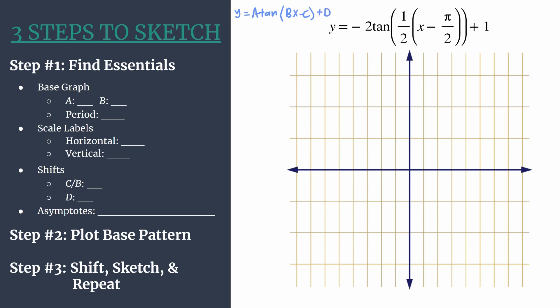Y equals a tangent bx minus c plus d. And note that our b term has been factored out in this equation. We see that 1 half times x minus pi over 2. So really what we have here is bx minus c over b. And that's a really good thing. We can very clearly see the phase shift, which will be pi over 2.